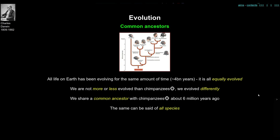The way to talk about this is that we share a common ancestor with chimpanzees, which happened to be about six million years ago. The same can be said of all species — plants and bacteria and humans and slugs. We're all related and we can all find at some stage a common ancestor.